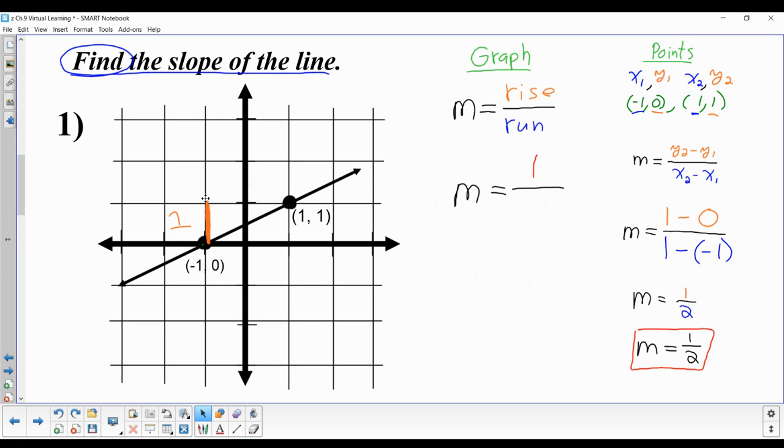The run is how far over you count. Since we're counting to the right, it's positive. Counting 1, 2, the run is 2.